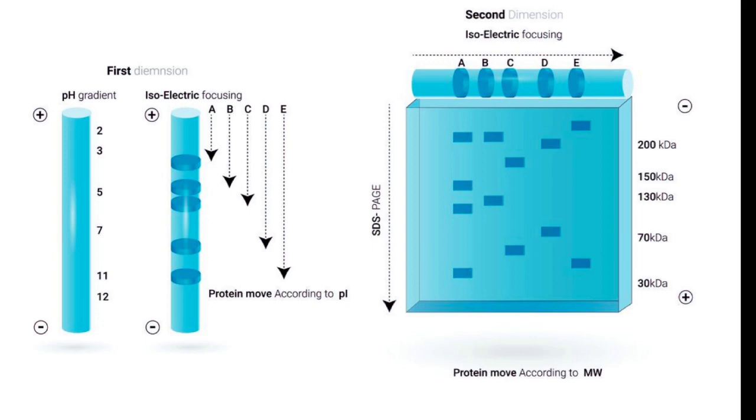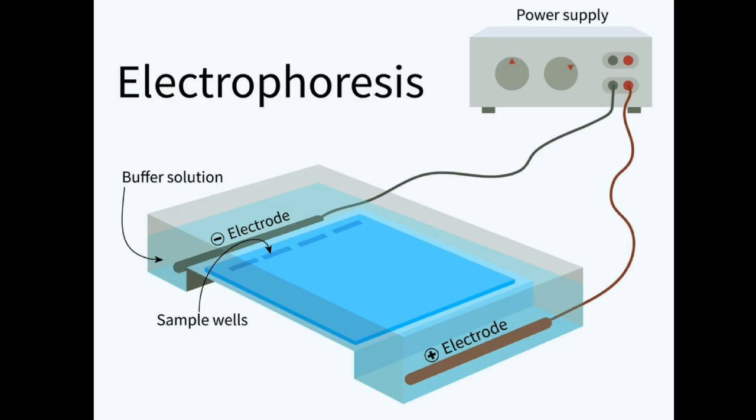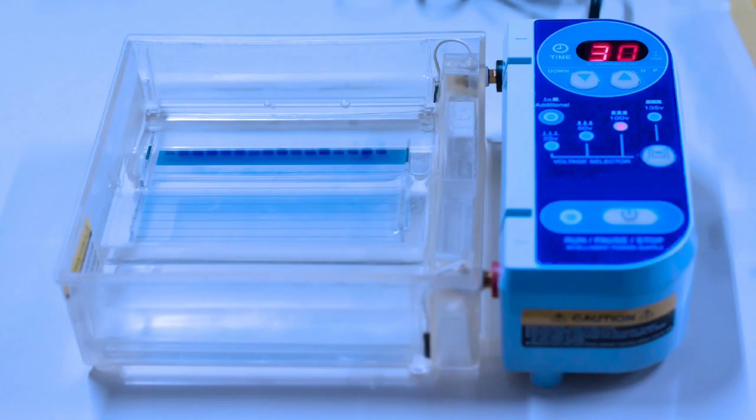3. Electrophoresis. The gel tray or capillary tube is placed in an electrophoresis chamber filled with the buffer solution. Electrodes connected to a power supply are positioned at both ends of the chamber. The negative electrode, cathode, is placed at the end where the sample is loaded, while the positive electrode, anode, is placed at the opposite end.